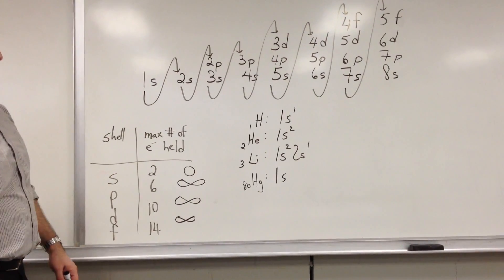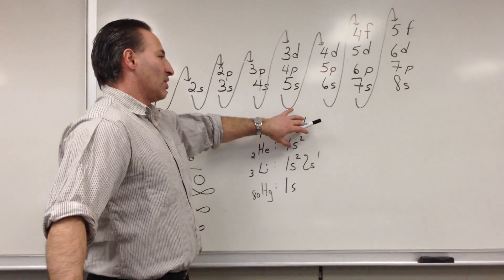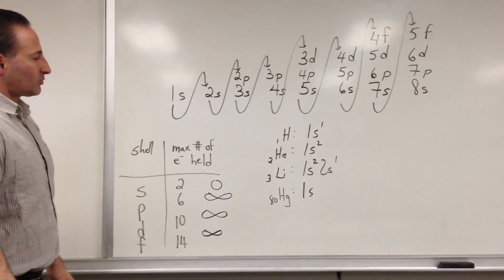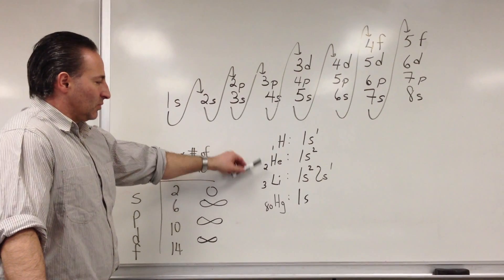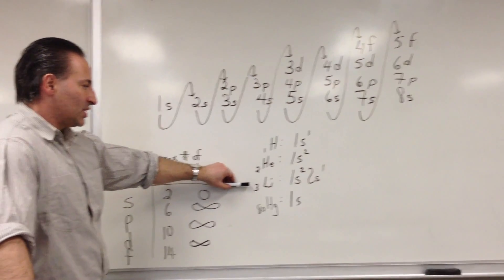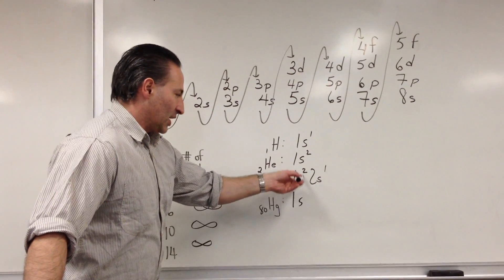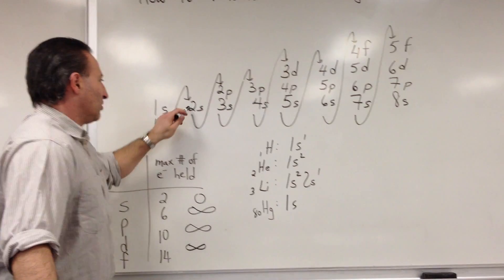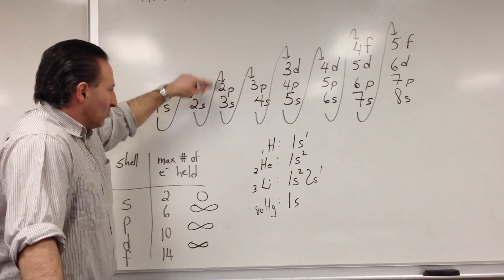Remember, we're talking about ground state elements. In an excited atom, it can happen that you have some electrons at a lower level and some electrons at a higher level. Let's look at lithium. Lithium has three protons and therefore three electrons when it's a neutral atom. So it will fill the S orbital — 1s2 — and then it will put one electron in the next highest level, which is the 2s orbital. And we follow the pattern.